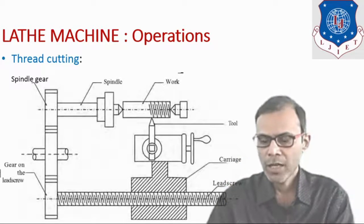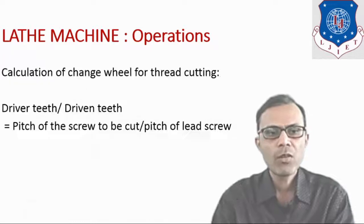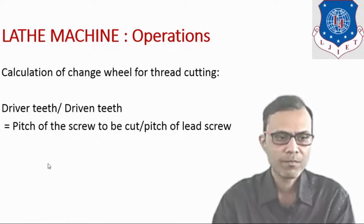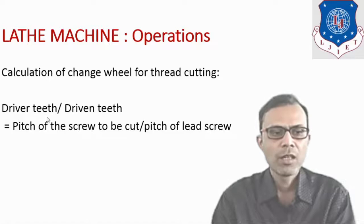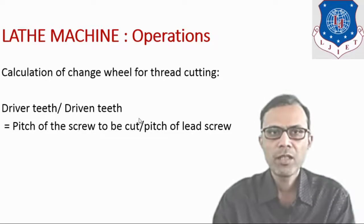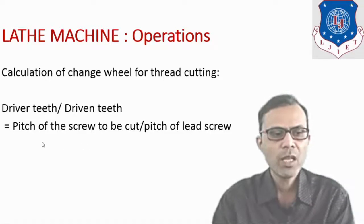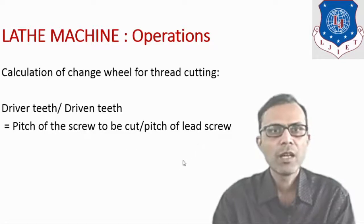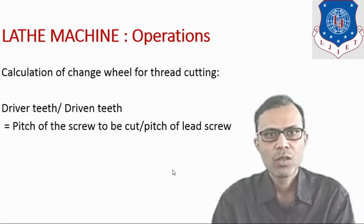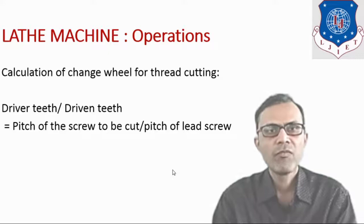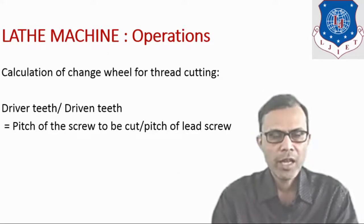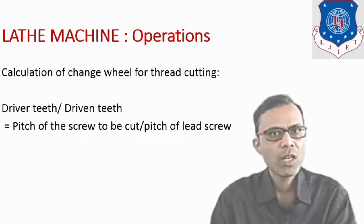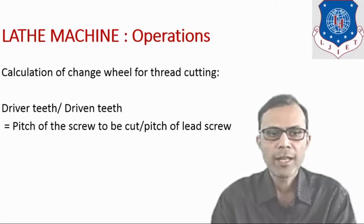The change wheels are calculated by the equation: driver teeth divided by driven teeth equals pitch of the screw to be cut divided by pitch of the lead screw. By applying this equation, we can calculate the change wheel teeth. The gear train may be a simple gear train or a compound gear train.